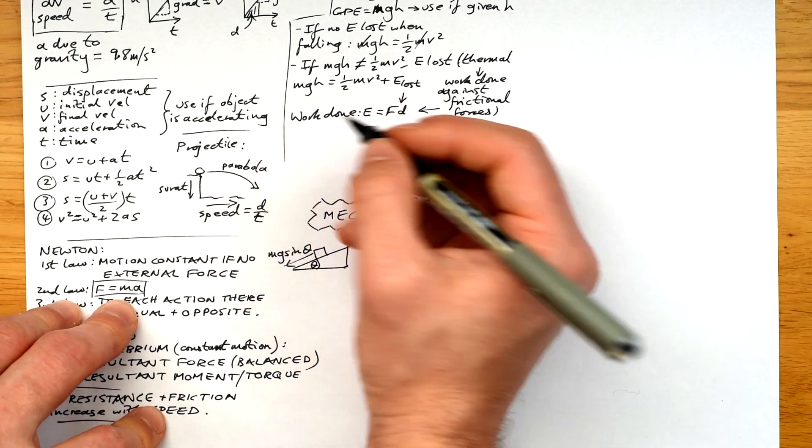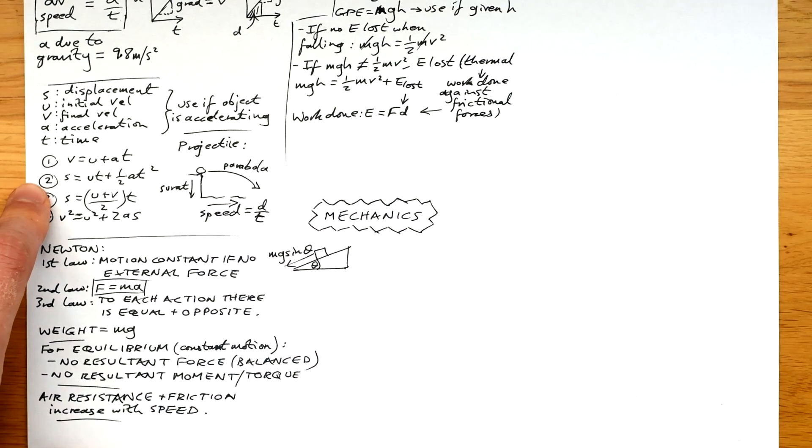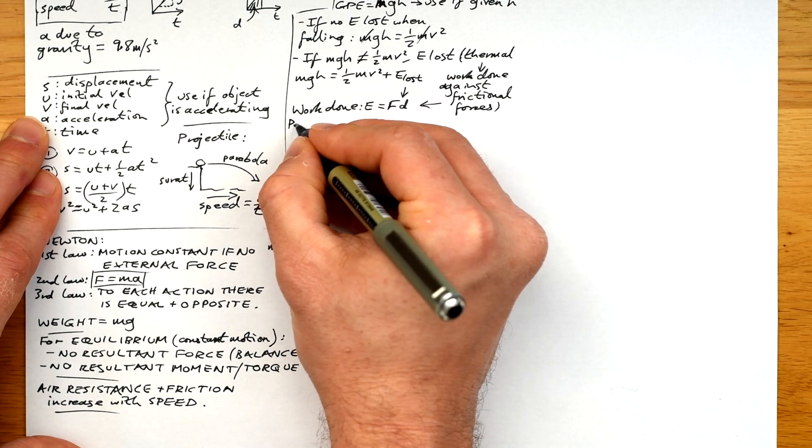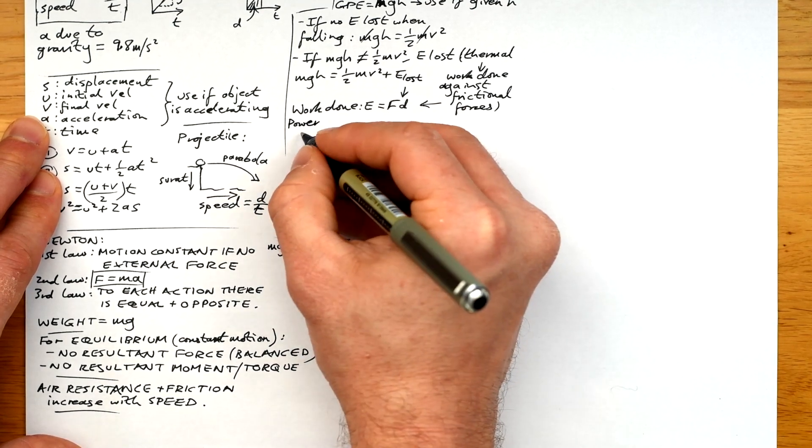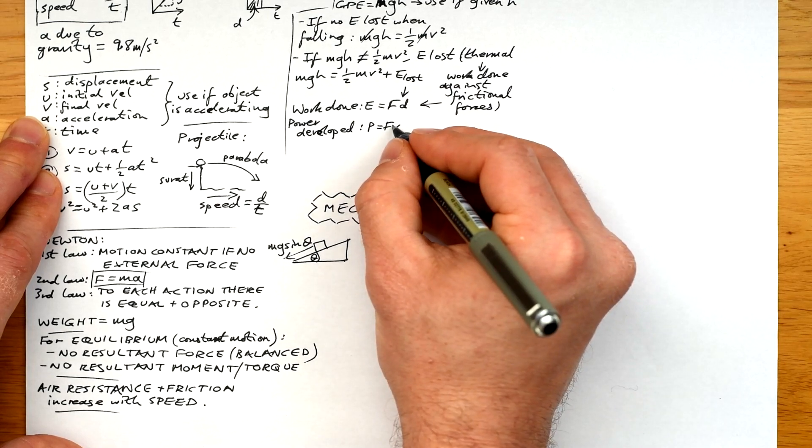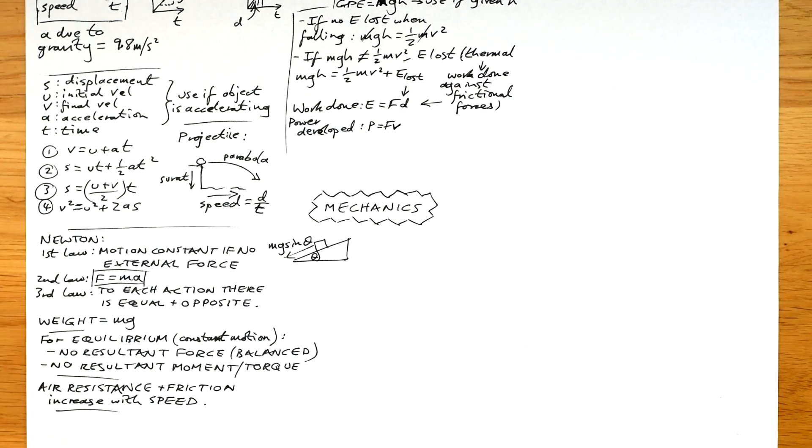That leads us nicely onto work done. Work done is equal to force times distance. E equals FD. I prefer E, some people use W, but it is energy as measured in joules. Remember that the force and distance need to be parallel. So if they're not, then you need to times by cos theta, theta being the angle between them. The power version of this, power developed, is P equals FV. We've just divided the whole equation by time.